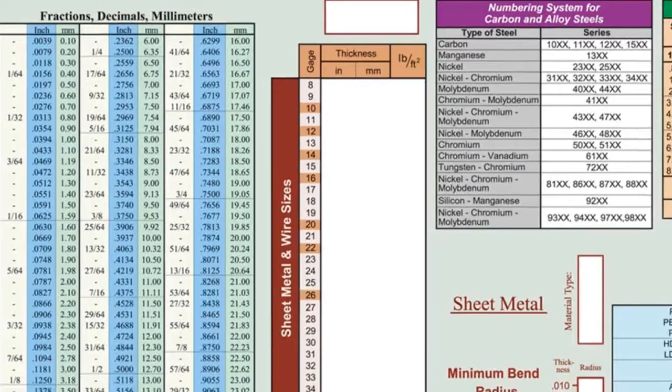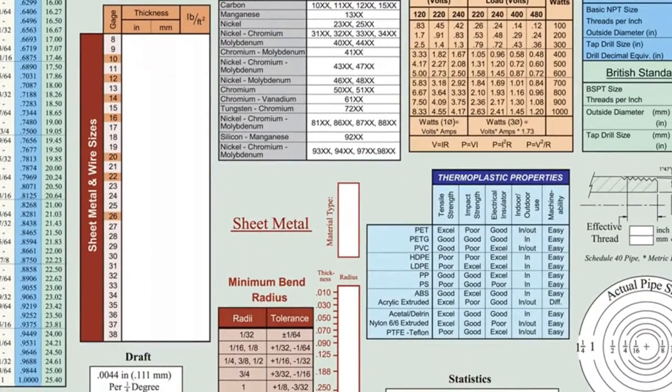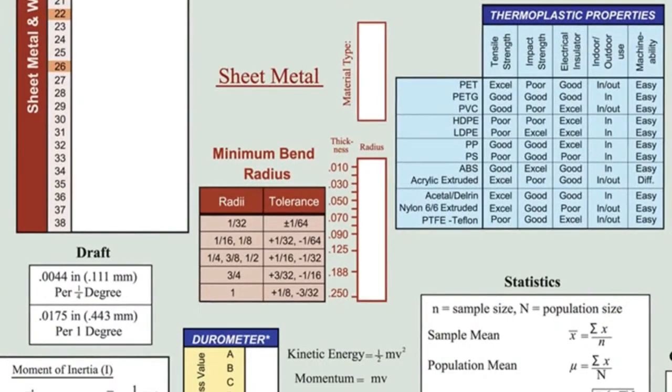To the right of that, there are two tables for sheet metal. The larger for density and thickness of various metals and gauges. The smaller table lists rules of thumb for the bend radius of different materials and thicknesses.